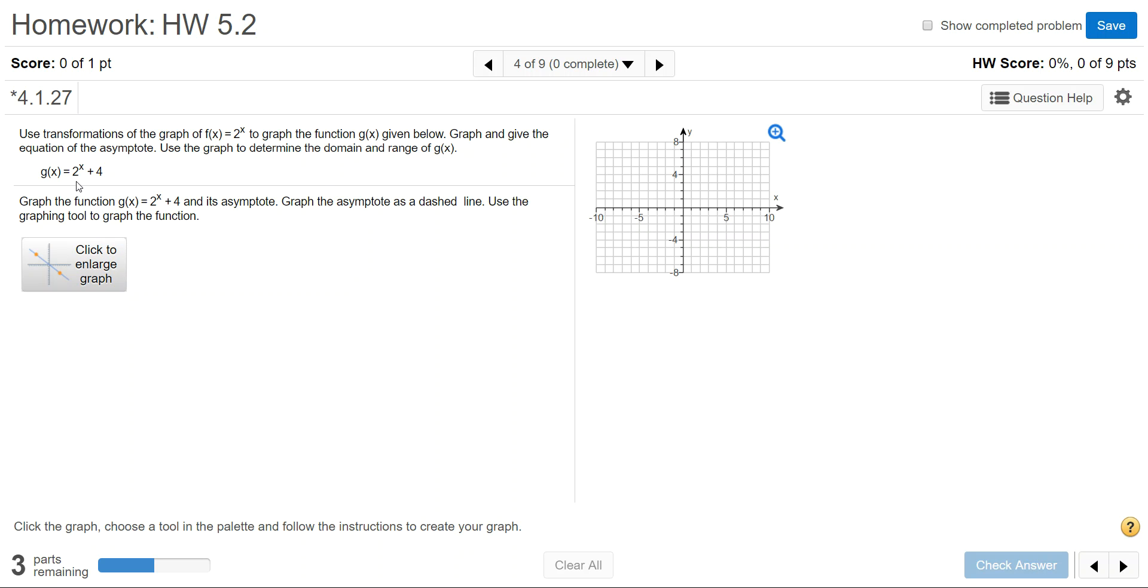g(x) is 2^x + 4. In this graph, plus 4 is a movement that is up 4.